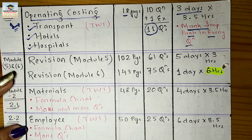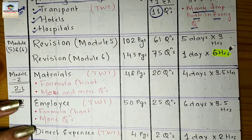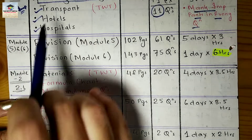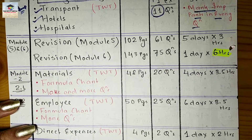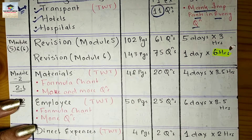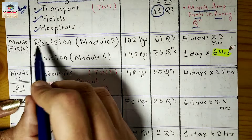You have to mark every important part in every question so that during revision you can go through only those marked parts. This completes Module 5. At this point, we are done with Modules 1, 5, and 6, so we will keep six revision days to revise Modules 5 and 6.